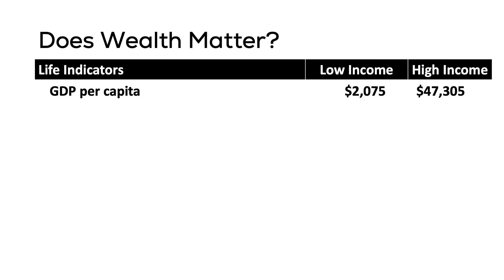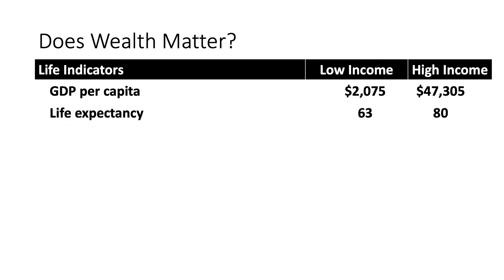This translates to differences in other measures of well-being. Life expectancy is 17 years longer in high-income countries. On average, people only live to 63 years old in low-income countries compared to 80 years old in high-income countries. There are only three physicians for every 10,000 individuals in low-income economies, compared to 30 physicians per 10,000 people in high-income economies.